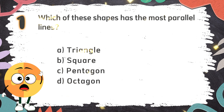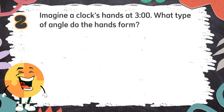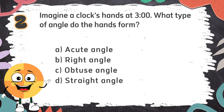The correct answer is D. Octagon. Number 2: Imagine a clock's hands at 3 o'clock. What type of angle do the hands form? The choices are: A. Acute angle, B. Right angle, C. Obtuse angle, D. Straight angle.